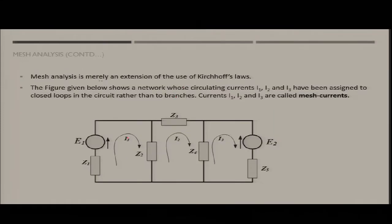The number of loops or mesh variables is given by b minus n plus 1, where b is the number of branches and n is the number of nodes. If you have three loops, you will have three variables. Note that a series connection counts as one branch — this was covered in the previous lecture on topology.